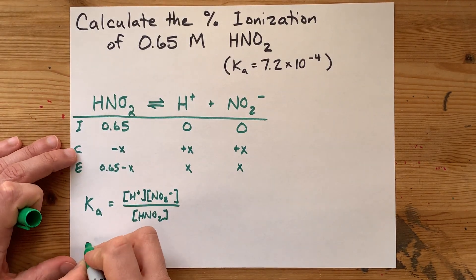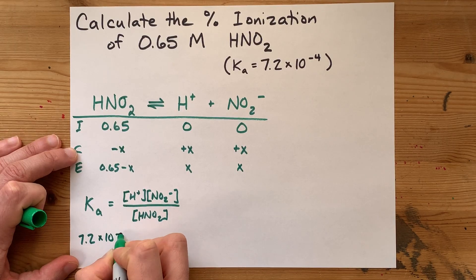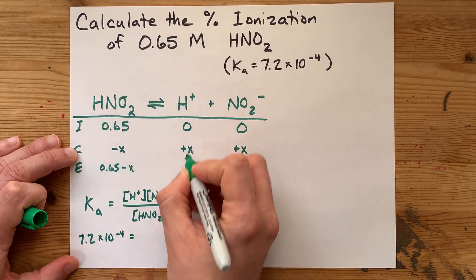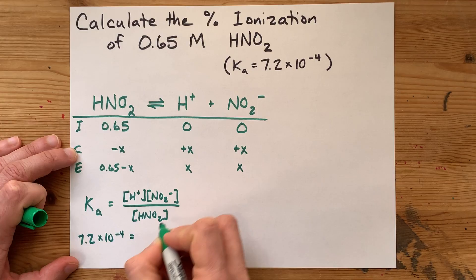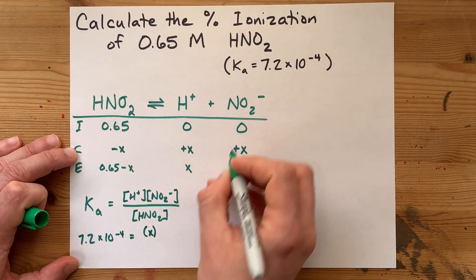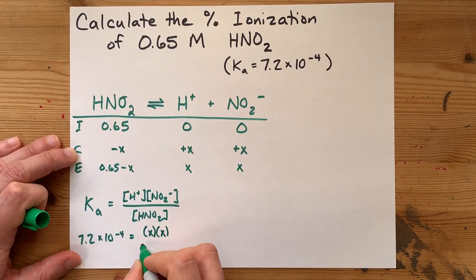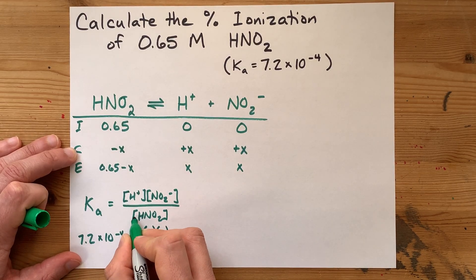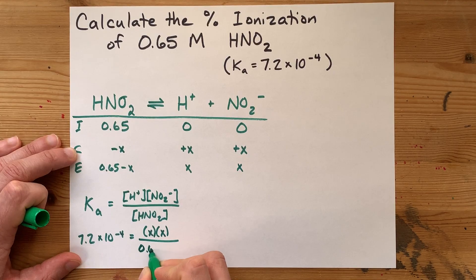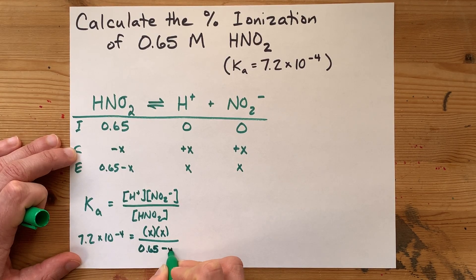For us, it is 7.2 times 10 to the negative 4 equals the concentration of H plus at equilibrium is X, the concentration of NO2 minus at equilibrium is X, and the concentration of HNO2 is the 0.65 that we started minus X.